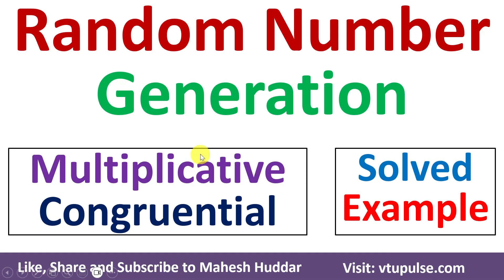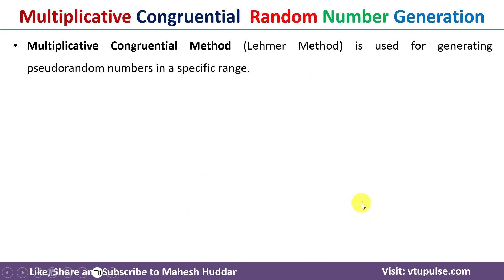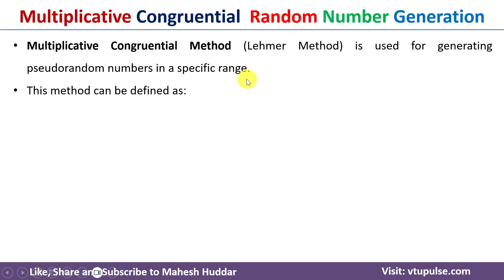Welcome back. In this video I will discuss how to generate random numbers using the multiplicative congruential method with a simple solved example. First I will discuss what the multiplicative congruential method is. The multiplicative congruential method is used for generating pseudo-random numbers in a specific range.